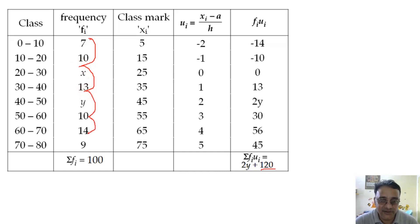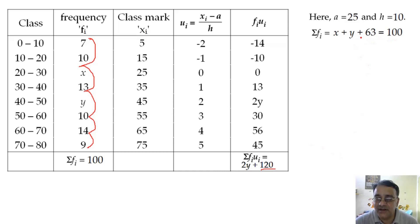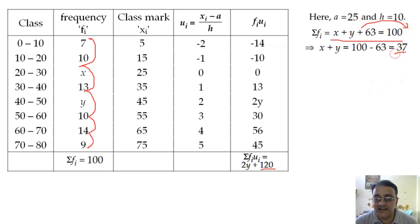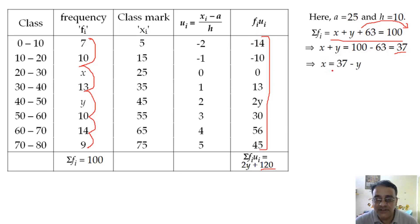Adding all frequencies: 7 + 10 + 13 + 10 + 4 + 9 = 53... with x and y: x + y + 63 = 100, so x + y = 37. Therefore x = 37 − y. This gives us a relation between x and y using only the frequency sum condition.